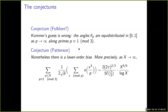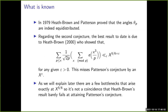The folklore conjecture was settled in 1979 by Patterson and Heath-Brown, who showed the angles θ_p are equidistributed. For Patterson's second conjecture, the best known unconditional result is due to Heath-Brown, who obtained a bound only x^ε away from the conjectured second-order term x^{5/6}. When I get to explaining the proof, it will become apparent that there are several bottlenecks that arise exactly at the 5/6 exponent.